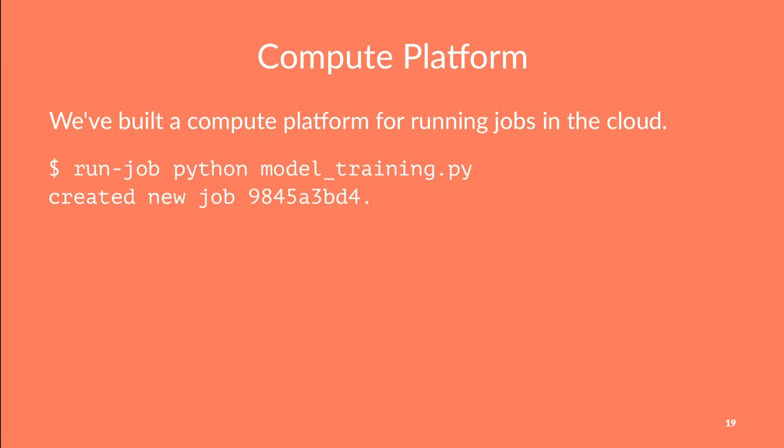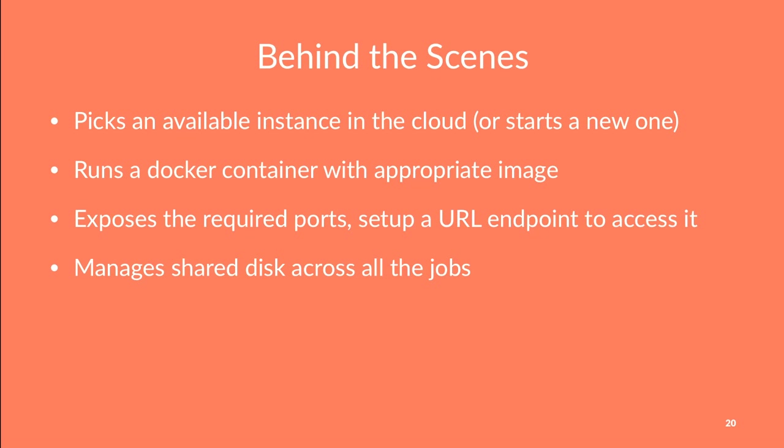The platform lets you say 'I want to run this program,' and it starts a job on the cluster and begins running it. You can specify the instance type you want — say, 4GB RAM or 8GB RAM — and you can also specify the environment, like Python 3.x or Python 2.7 with scikit-learn. It picks the right environment and runs the job. Behind the scenes, it picks an available machine in the cloud, starts one if nothing is available, runs a Docker container with the appropriate image, and exposes any required ports. It also manages shared storage so that if you're running multiple jobs, they can share data between them.